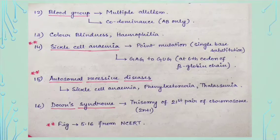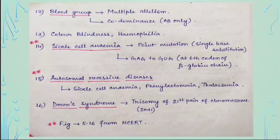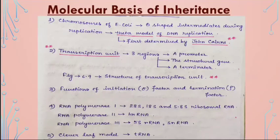Sickle cell anemia transforms the codon from GAG to GUG at the sixth codon of the beta-globin chain. Examples of autosomal recessive diseases include sickle cell anemia, phenylketonuria, and thalassemia — all very important for this year's NEET. Down syndrome is trisomy of the 21st pair of chromosomes (2n+1). Figure 5.16 from the NCERT showing the features of Down syndrome is very important for this year's NEET.